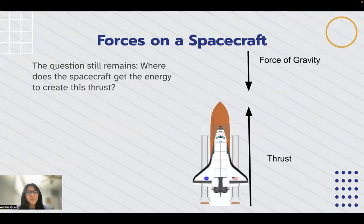So first, let's talk about the different forces on a spacecraft. As you know, before launch, everything on Earth, including this space shuttle, has a force of gravity on it which pulls it towards the ground. This stops the rocket from being able to move upwards since it needs to first combat that force of gravity.